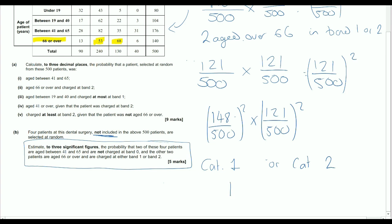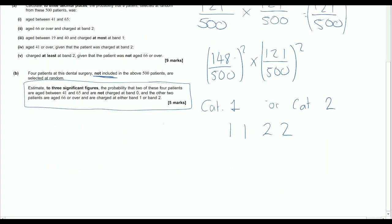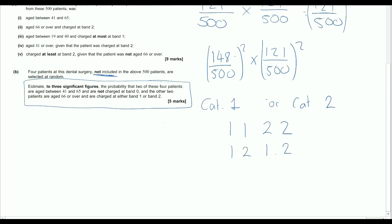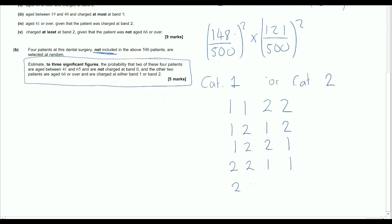So imagine we've got they're either in category one, the first category, so they're either between 41 and 65, not in band two. Or they're in category two, the second category, where they're over 66. So it could be that the first two people are category one, the second two are category two. The other combinations are these. And then if the first person is in category two, might be the second one's in category two, and so on. So once we've got these four people, two of them are in category one, two of them in category two, there are then six different possible arrangements that we could take.